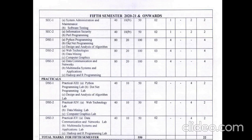DSE1 offers three subjects: Python Programming, .NET Programming, and Design and Analysis of Algorithms — choose any one — for 100 marks (80 external, 20 internal). DSE2 offers Web Technology, Data Mining, and Computer Graphics — choose any one — for 100 marks (80 external, 20 internal). DSE3 offers Data Communication Networking, Multimedia Systems and Applications, and Hadoop and R Programming — choose any one — for 100 marks (80 external, 20 internal).